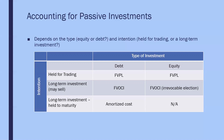In the case of equity, the fair value through OCI model is available, but it has to be an irrevocable election — the company cannot change its mind later on and switch from the FVOCI model to, say, the fair value through profit or loss model. So once that decision is made for an investment in shares, it cannot be changed.